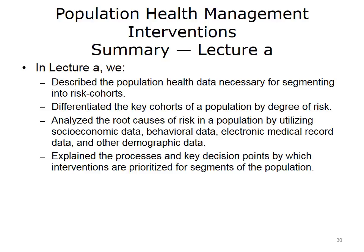We will now review the objectives of Lecture A of Population Health Management Interventions. We described population health data necessary for segmenting the population into risk cohorts of low, medium, or high risk. We differentiated the key cohorts of a population by degree of risk. We analyzed the root causes of risk in a population by utilizing various sources of data, including socioeconomic, behavioral, electronic medical record, and other demographic data. And we explained the processes and key decision points by which interventions are prioritized for segments of the population.